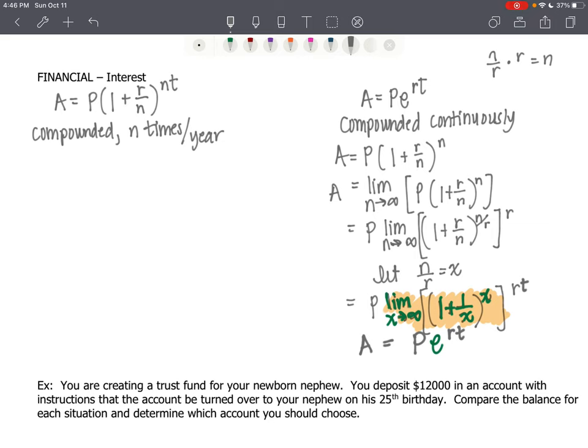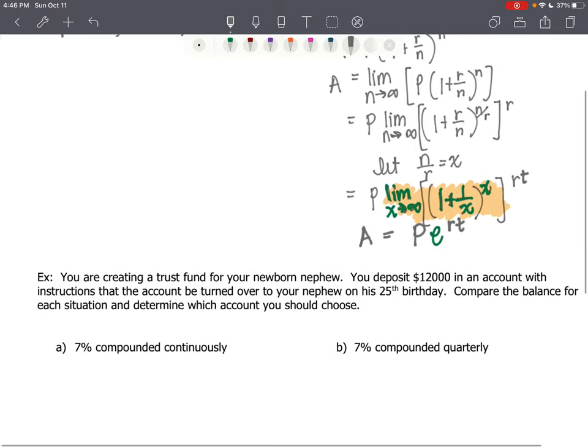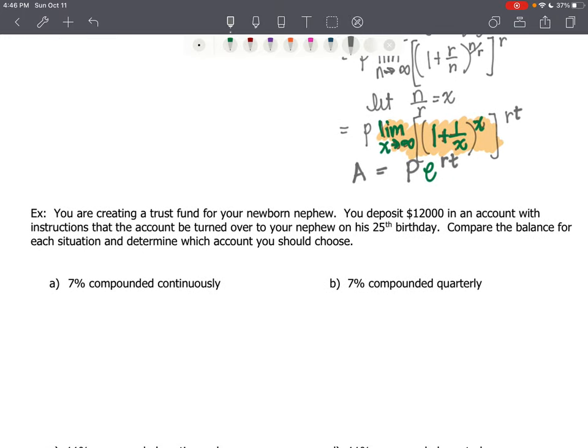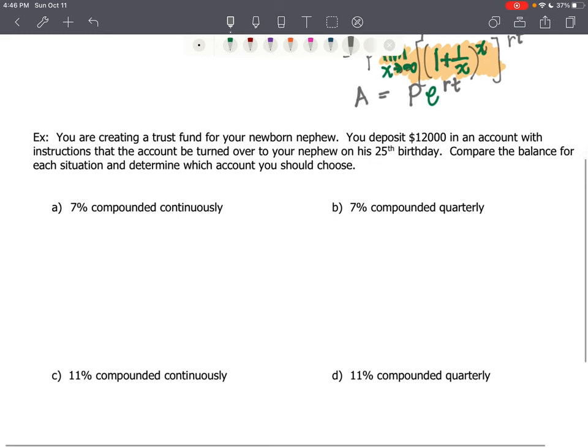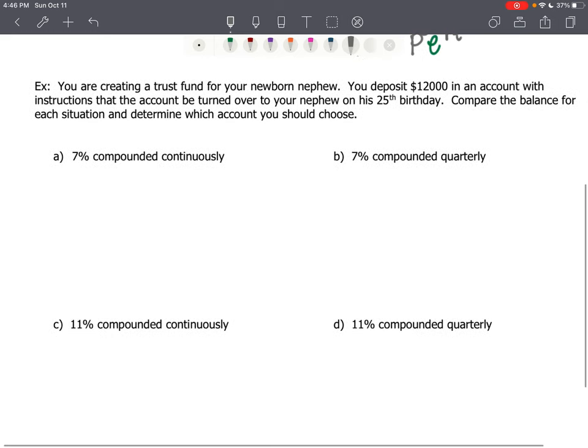Because this is a video, you can completely rewind, slow it down, watch it over a couple times if you're interested. But that's why they call E the banker's constant. Okay. Now that we have our two formulas, you're creating a trust fund for your nephew who was just born. You deposited $12,000 in an account with instructions that the account be turned over to your nephew on his 25th birthday. Compare the balance for each situation and determine which account you should choose.